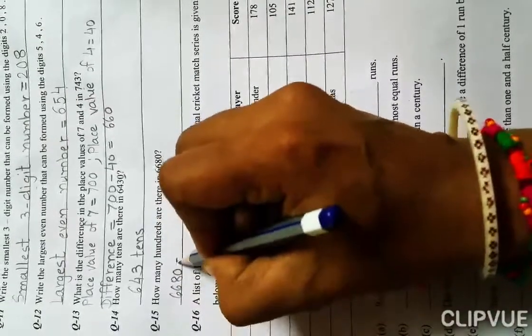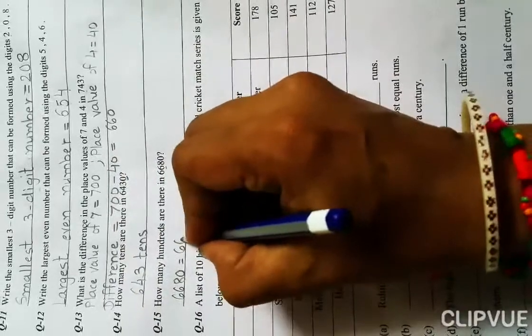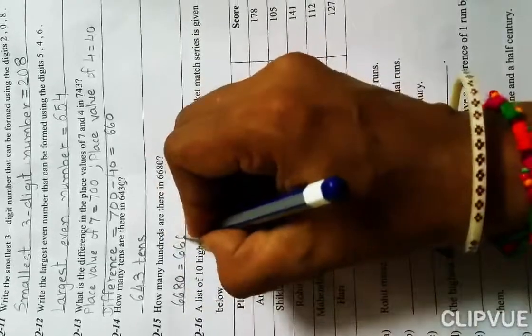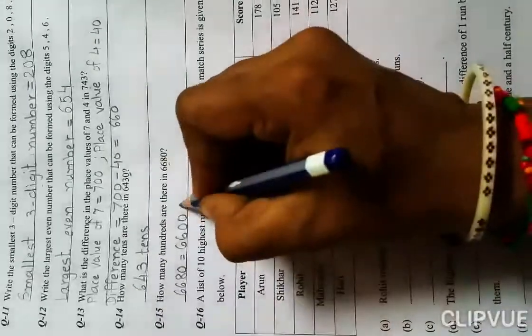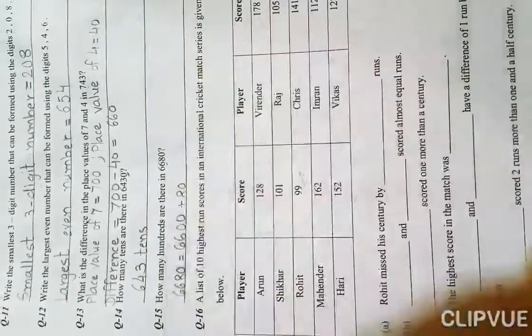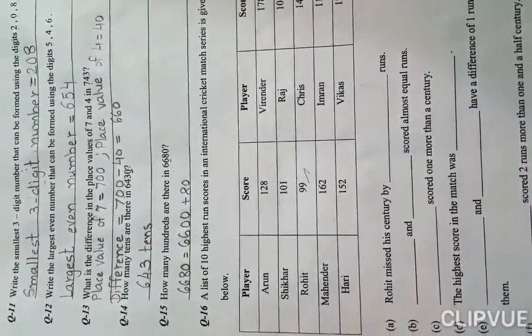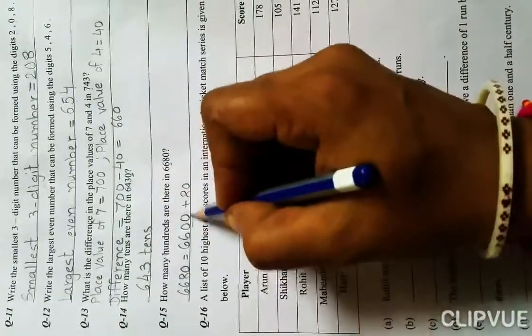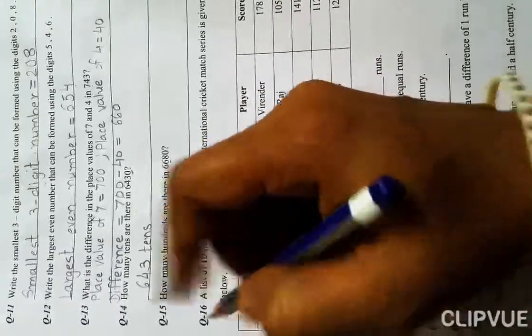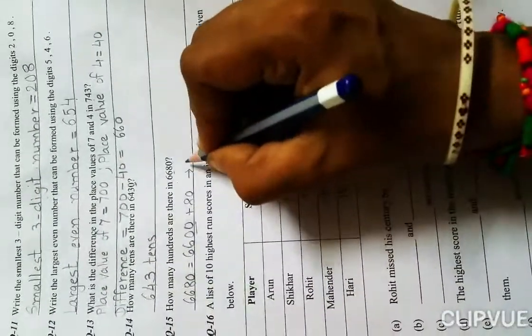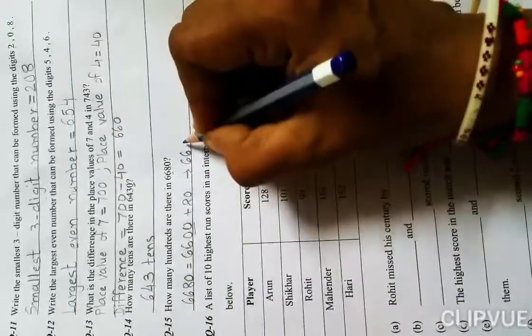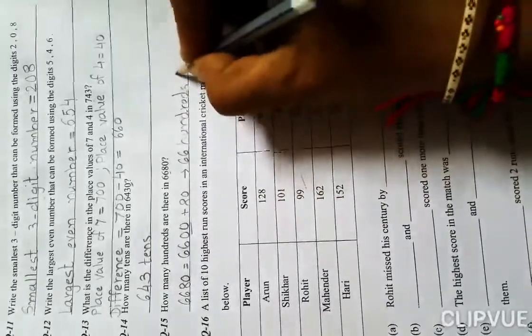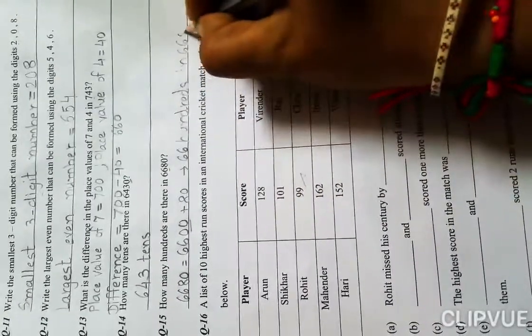I write the number as it is: 6 at thousands place as it is, hundreds place as it is, and then ones and tens place I keep zero. Plus 80. Like expanded form. Now, how many hundreds? Hundreds has two zeros, what number comes before? 66. So there are 66 hundreds in this number.